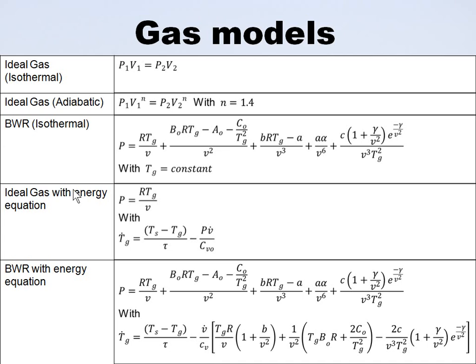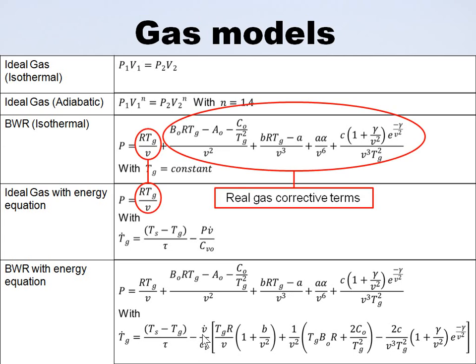The fourth model is the ideal gas model with an energy equation, which takes into account heat exchange with the surroundings through the accumulator wall. The fifth is the Benedict-Webb-Rubin equation also with the energy equation. The ideal gas and the Benedict-Webb-Rubin equation are essentially the same except that the real gas approach has corrective terms to model deviations at low temperatures or high pressures where ideal gas assumptions break down.